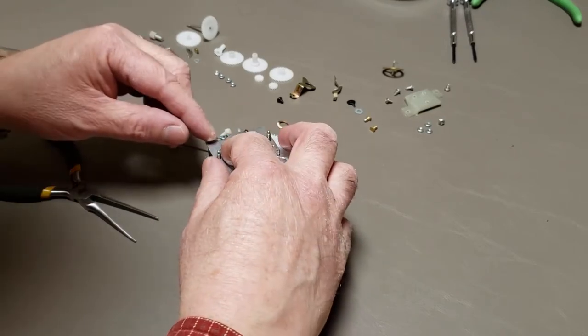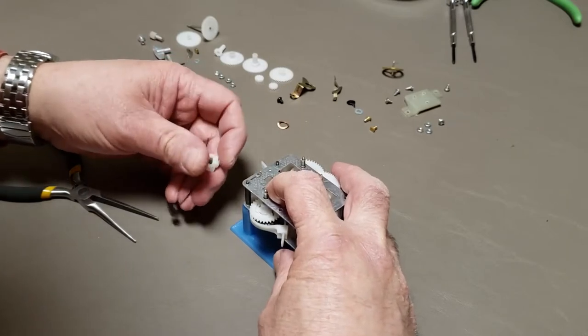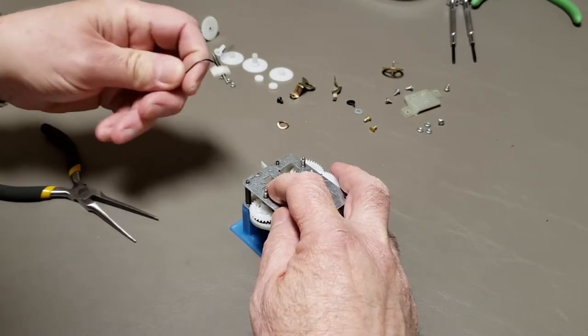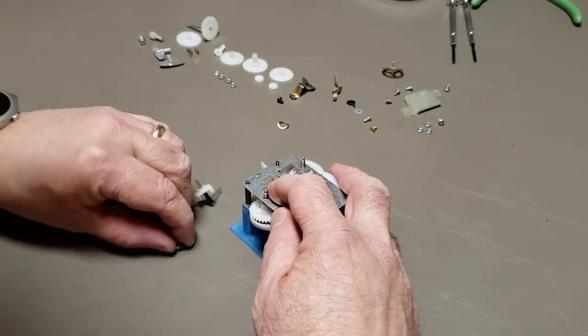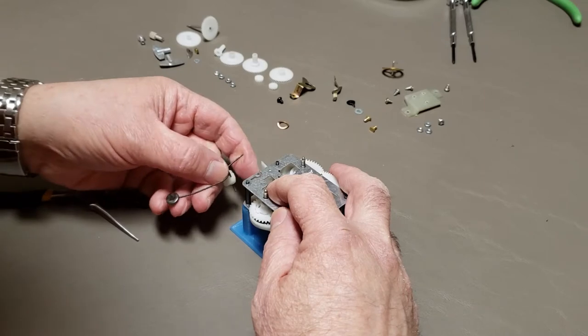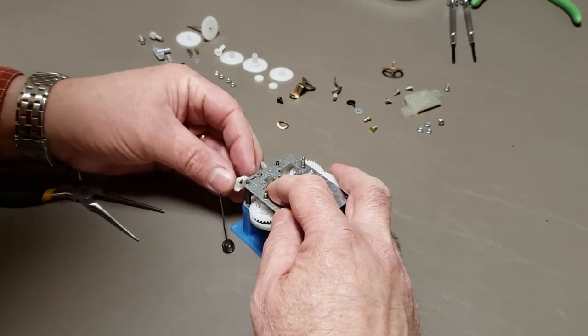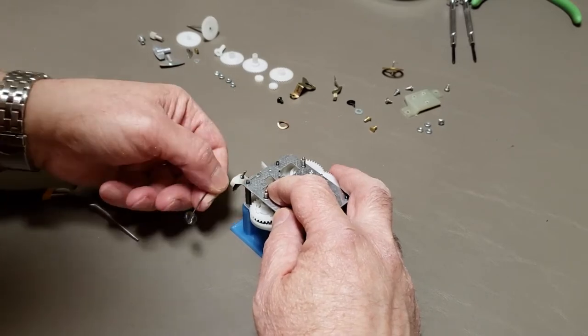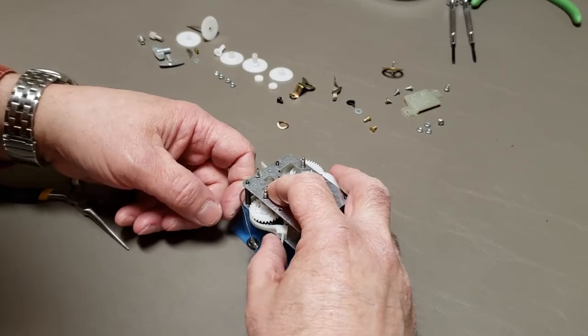And like I said, the tricky one is this escape wheel. I'm sorry, it's not going to be very visible, but the anchor goes up like this. It has a long end that goes through the back plate like that.